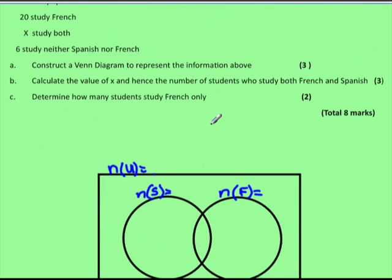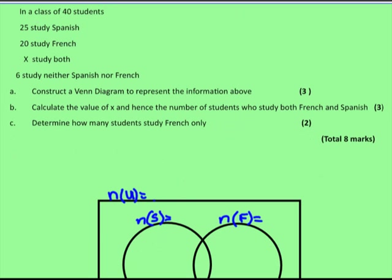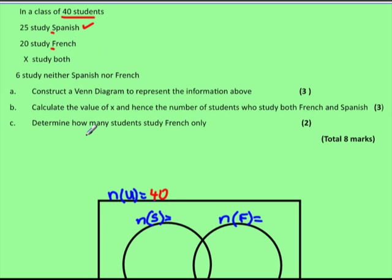We have the Venn diagram here and we want to use the information above to complete it. We have 40 students in the universal set — that is, the class represents the universal set of students. So 40 students is the universal set. The number of students studying Spanish is 25, which we place on top of the Spanish circle. We'll use S for Spanish and F for French.